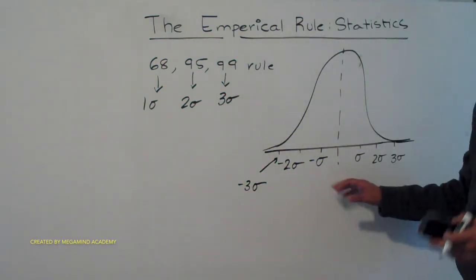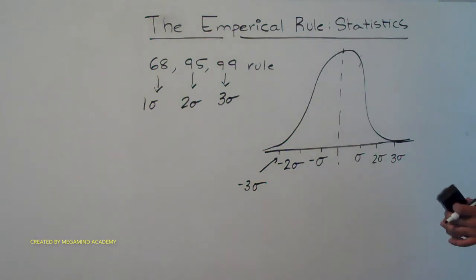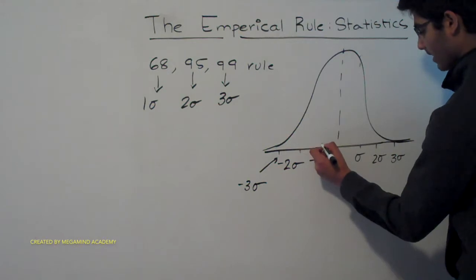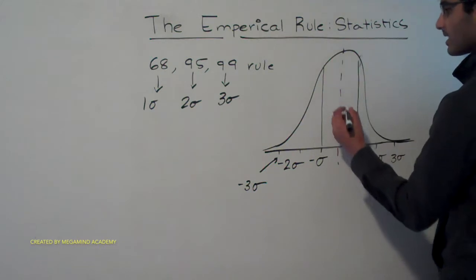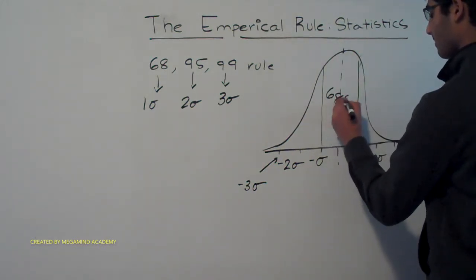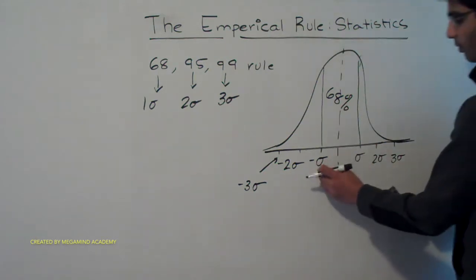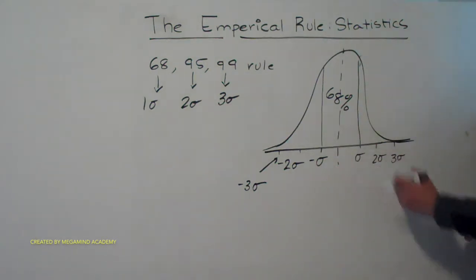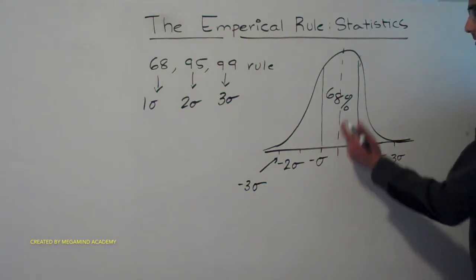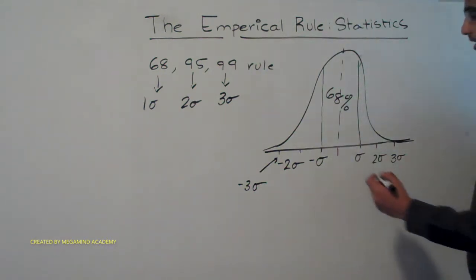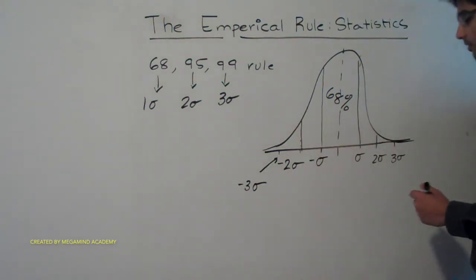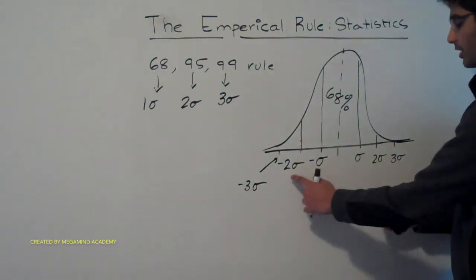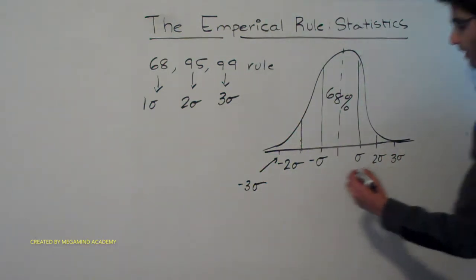We know that the standard deviation is some value that we can get from the calculator or from the formula. But what the empirical rule tells us is that this percentage of the data — it tells us that this is 68% of the data. So between negative one standard deviation and one standard deviation away from the center, we have 68% of the data there.